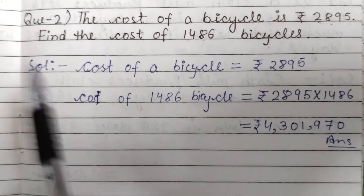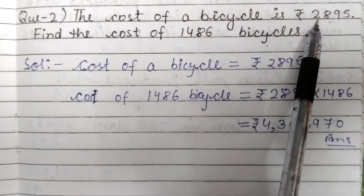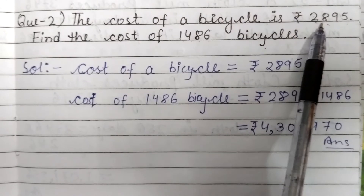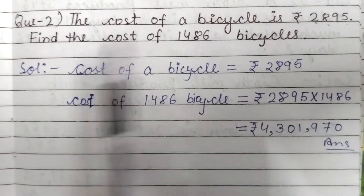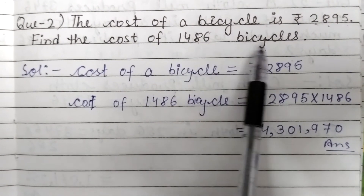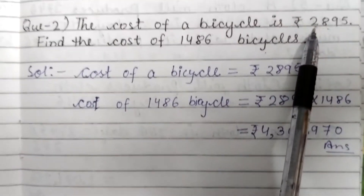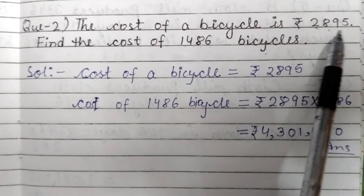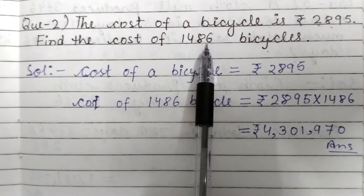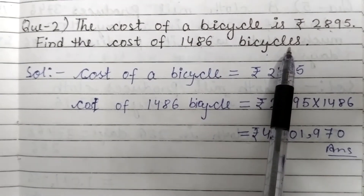The next question is: the cost of a bicycle is 2,02,895. Find the cost of 1,486 bicycles. So the cost of a bicycle is two lakh two thousand eight hundred ninety-five, and we need to find the cost of 1,486 bicycles.